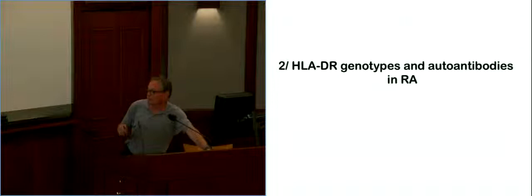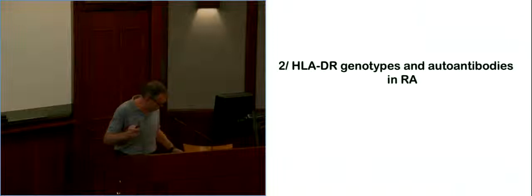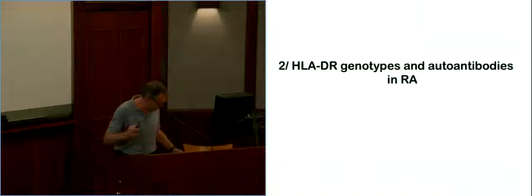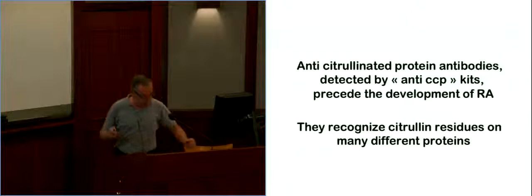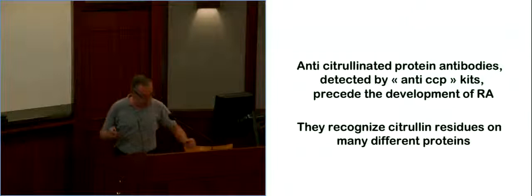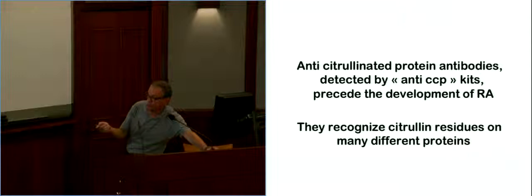So the second part is now playing with these DR genotypes, and how they influence autoantibodies, and by which means. So that's the same idea. Here, HLA molecule, peptide, T-helper cell, autoantibody, how does that work? So we focus first on ACPA, because they precede the development of RA, and they recognize citrulline residues on many different proteins. Actually, nobody knows really if there is one particular citrullinated protein. That's the target of them. They're usually detected by so-called anti-CCP kits, but these are not actual proteins. You know, CCP are just synthetic peptides. Nobody really knows what is in these kits.